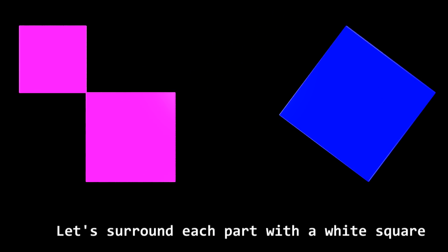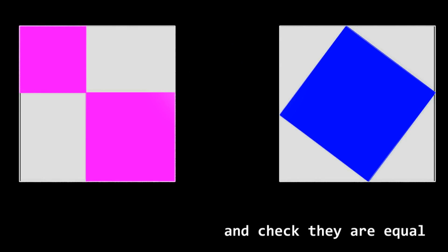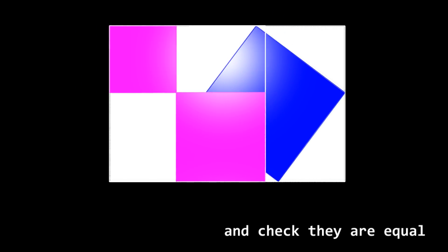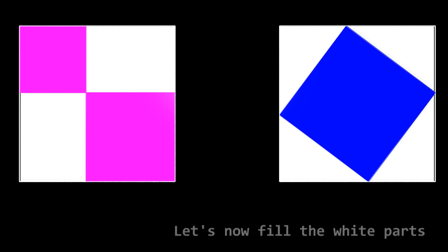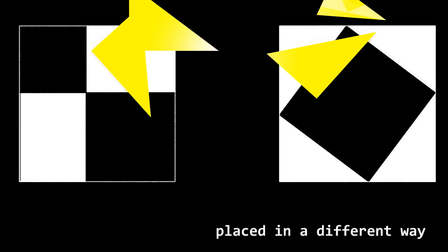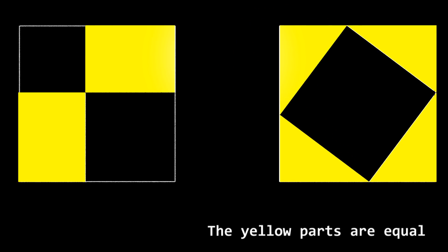Let's surround each part with a white square and check they're equal. Let's now fill the white parts with four equal yellow right triangles placed in a different way. The yellow parts are equal.